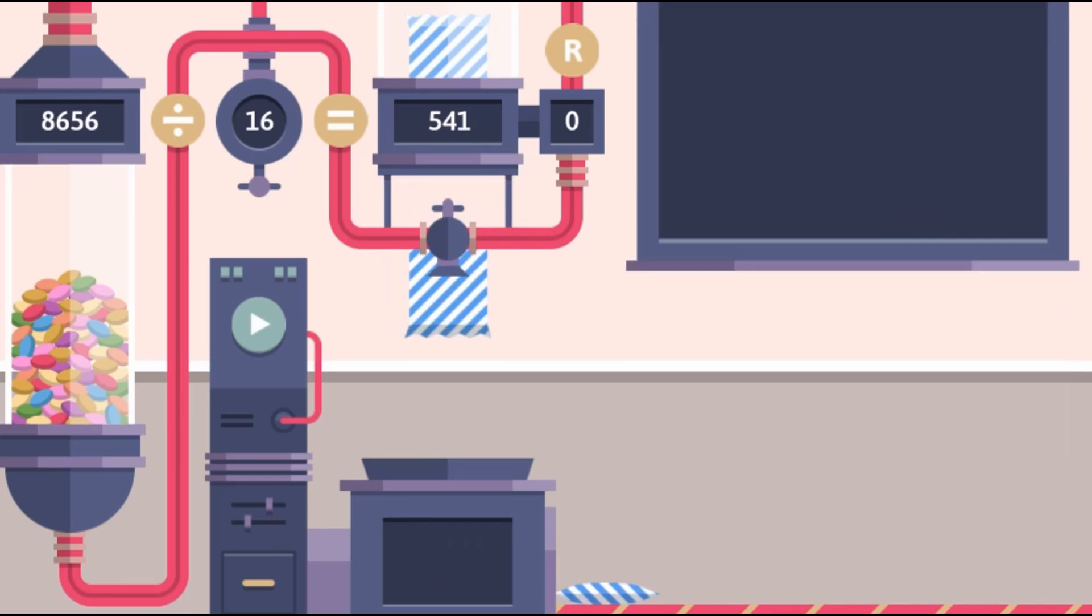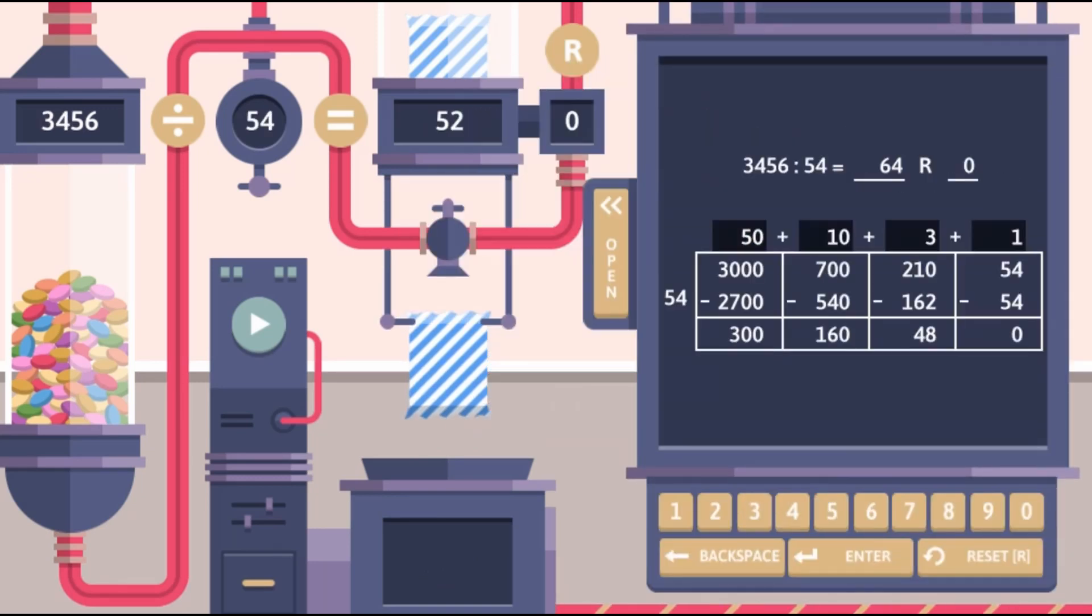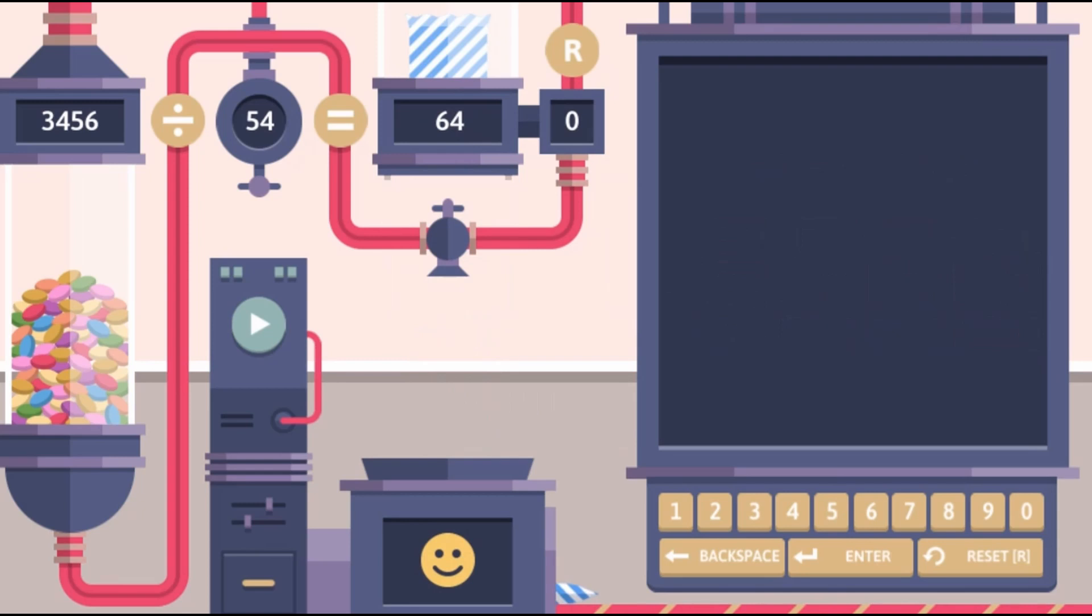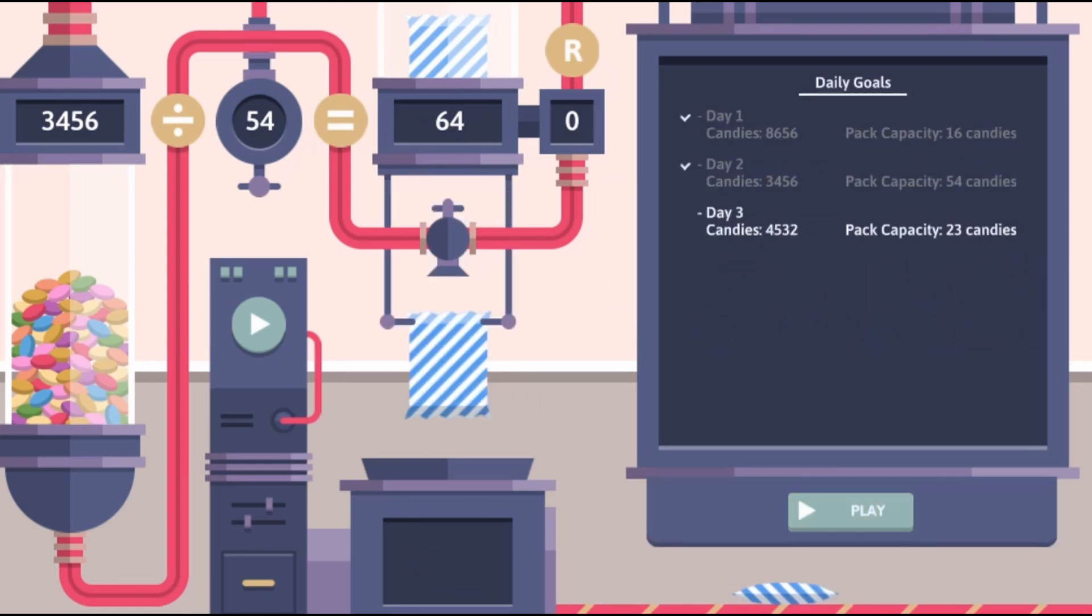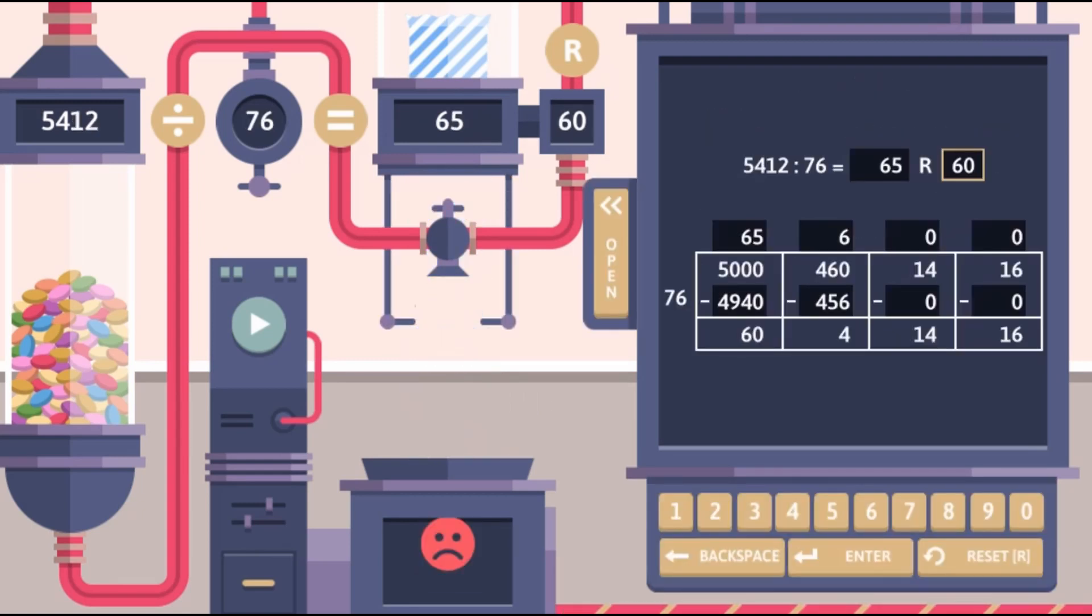Use your knowledge of division to calculate the correct amount of packets you can create for the day. Use the mouse to click on the number pad provided to insert the correct numbers into the division quotient.